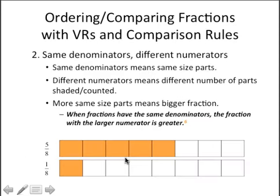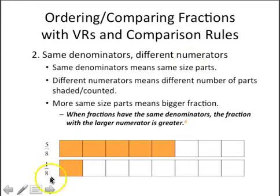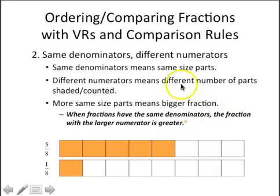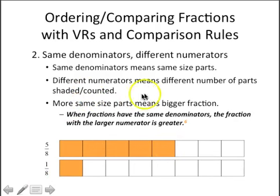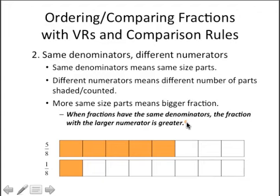The second type of comparison is same denominator, different numerator. We're looking at a comparison between five-eighths and one-eighth. Both fractions have eight in the denominator — same denominator, but different numerator. Same denominators mean same-size parts, so the eighths are the same size. Different numerators means different number of parts shaded: five-eighths means five shaded and one-eighth means one shaded. More same-size parts means a bigger fraction, so when fractions have the same denominators, the fraction with a larger numerator is greater. Pause and fill in guided notes number six.